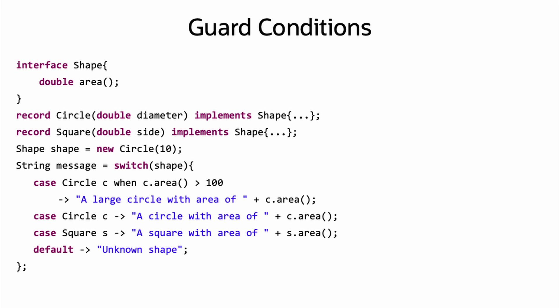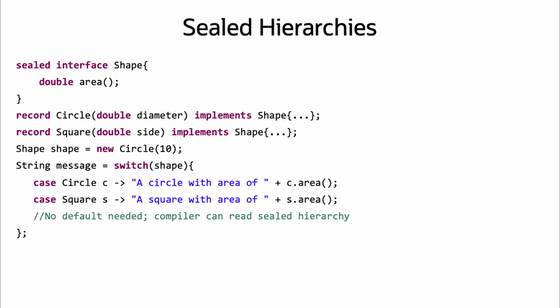Switch cases can also include guard conditions, allowing case refinement within the case label itself instead of in the body of the case, improving readability and being less bug prone as well.